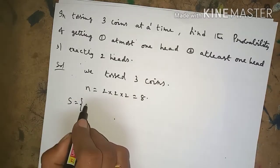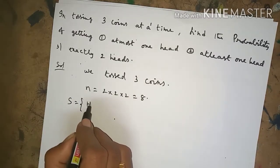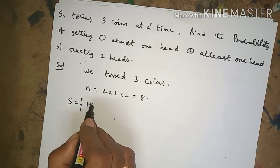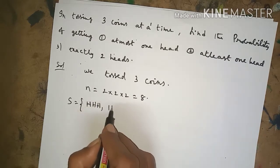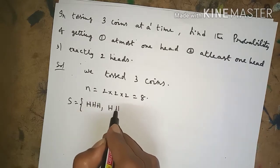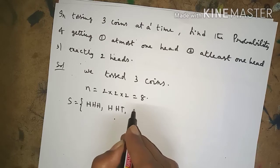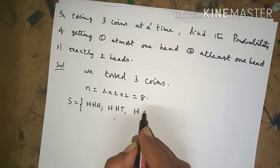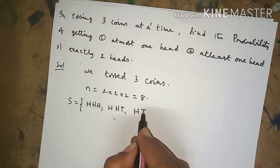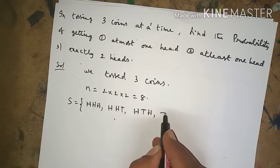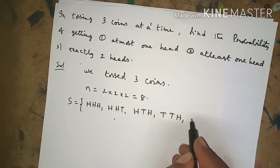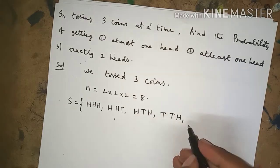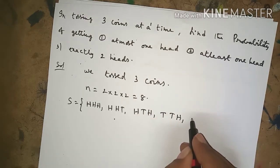The sample space S for tossing 3 coins — listing outcomes for first coin, second coin, third coin — includes: HHH, HHT, HTH, HTT, THH, THT, TTH, and TTT.